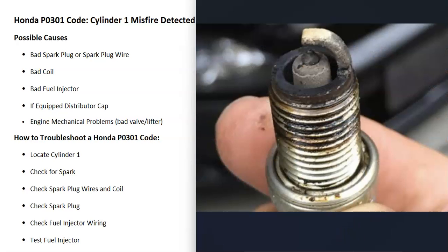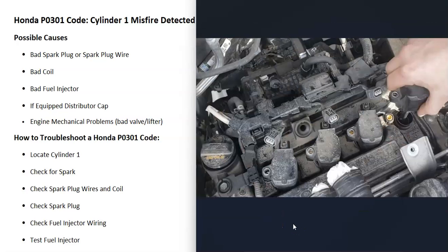You can pull the spark plug out and make sure it hasn't fouled out or gone bad. If you have ignition coils, you could swap the cylinder number one coil with the cylinder number two coil and see if the problem follows. If you swap them and then you're getting a P0302, you know that ignition coil is bad. That's another method for testing.